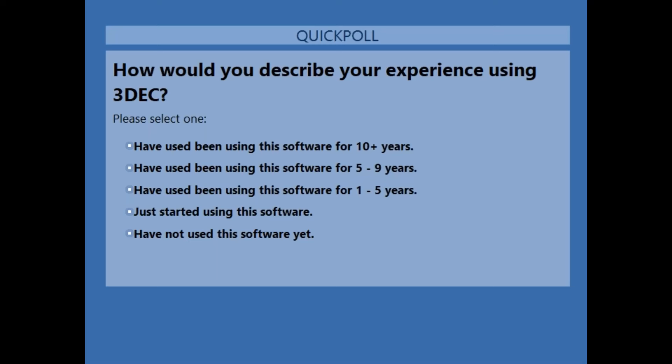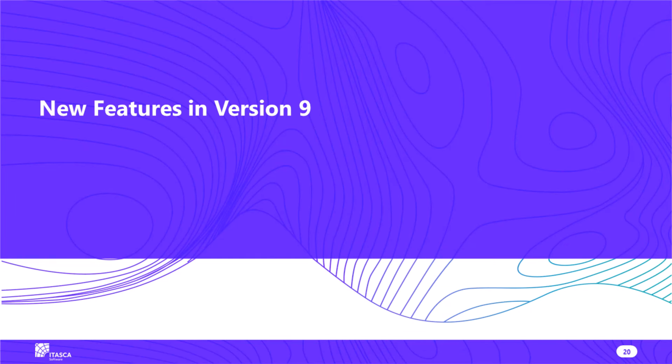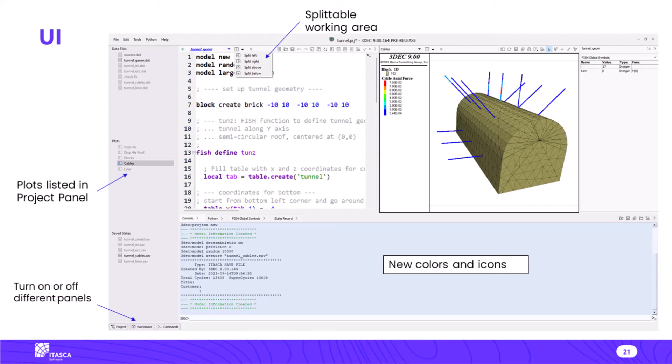Now we'll move on to the meat of the presentation — the new features in version 9. The first thing you will notice when you start version 9 is it looks different. The user interface is quite a bit different than it was in version 7 and version 5. Instead of talking to the slide, I'll actually open up the program and show you some things.